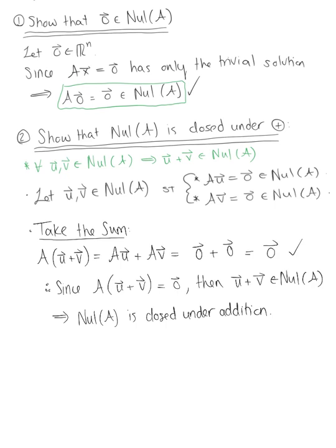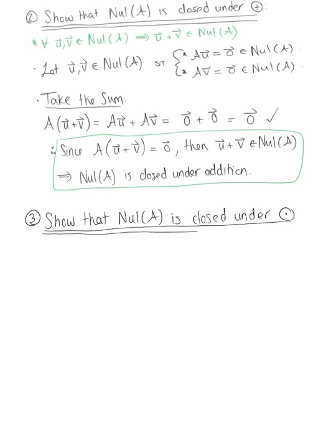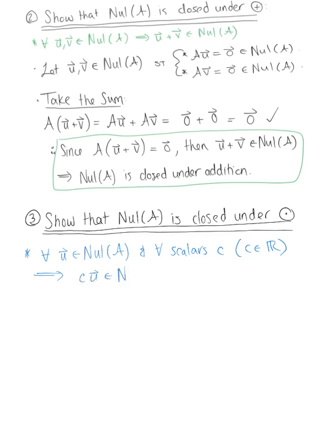So our second property is shown to hold true, and we have shown that the null space of matrix A is closed under addition. We're one step closer to showing that the null space of A is a subspace of ℝⁿ. Last but not least, we have our third and final property: we need to show that the null space of A is closed under scalar multiplication. We want to show that for all vectors u in the null space of A and for all scalars c in the reals, the scalar multiple c times u is also in the null space of A.